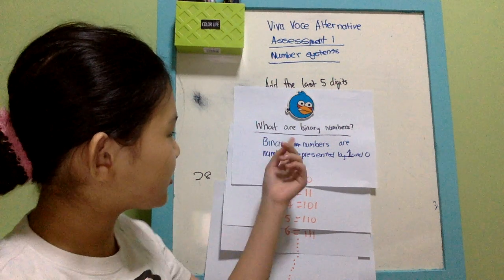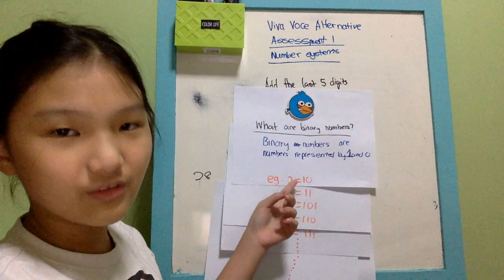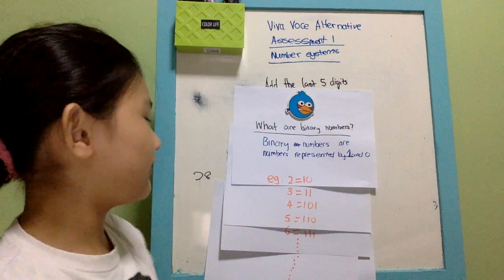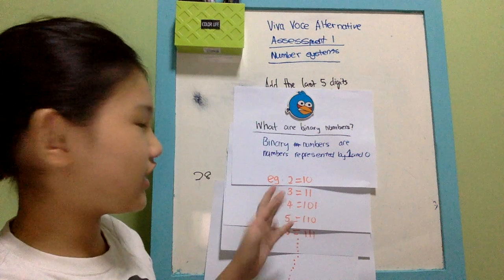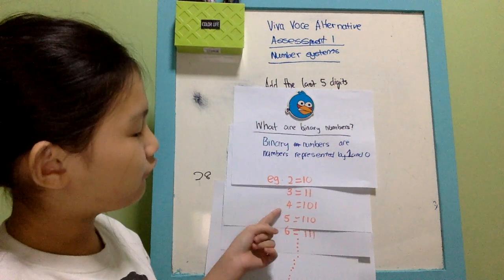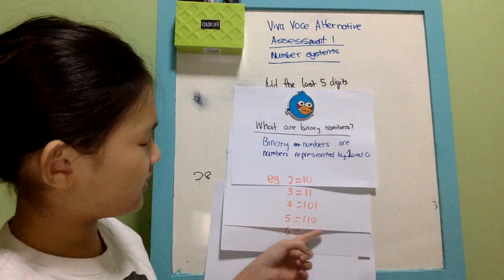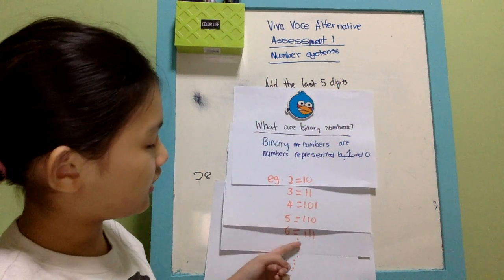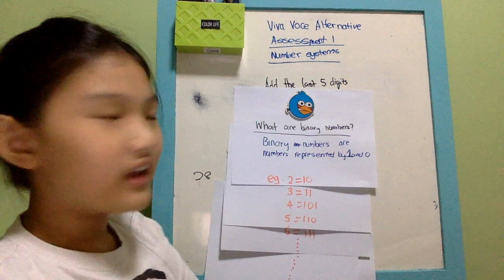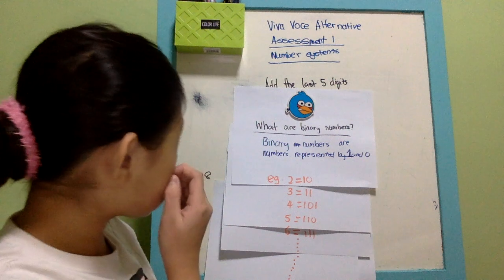Here are some examples of binary numbers. Two is '10' — you read it as 'one zero,' separately, not together. Three is '11.' Four is '100.' Five is '101.' Six is '110.' Seven is '111,' and so on.